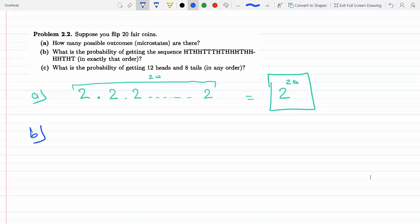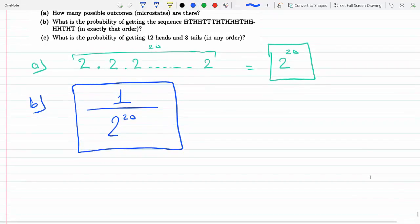this order out of all the possibilities, out of all the microstates we have. So that order is only one specific exact order out of 2^20. So there's only one way of getting that order out of 2^20, so the probability would be 1 out of 2^20.